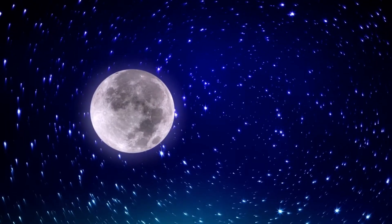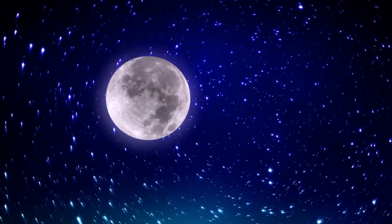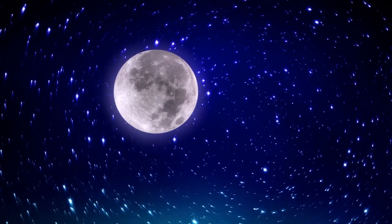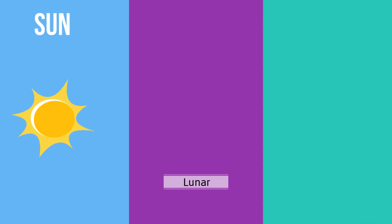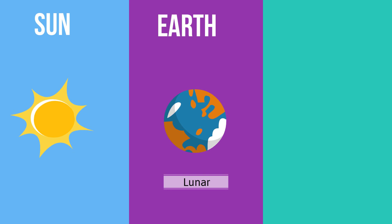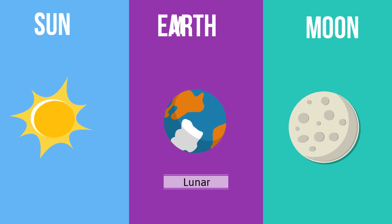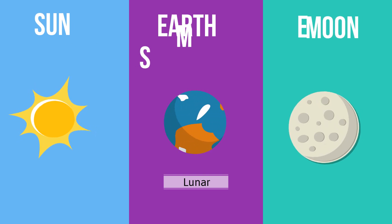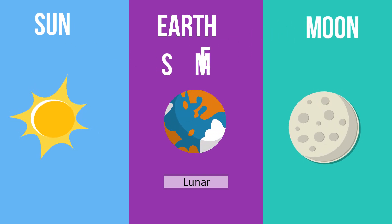During a lunar eclipse, the order of the celestial bodies is sun, earth, moon, or SEM.